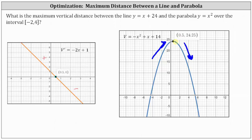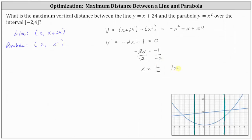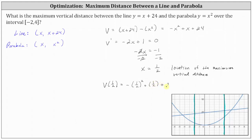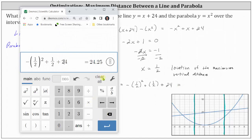This question is asking for the maximum vertical distance, which is the value of v. Going back, x equals one half is the location of the maximum vertical distance. Let's verify by determining v of one half: v of one half equals the opposite of the square of one half — note the negative is not being squared — plus one half plus 24, which gives us 24.25.